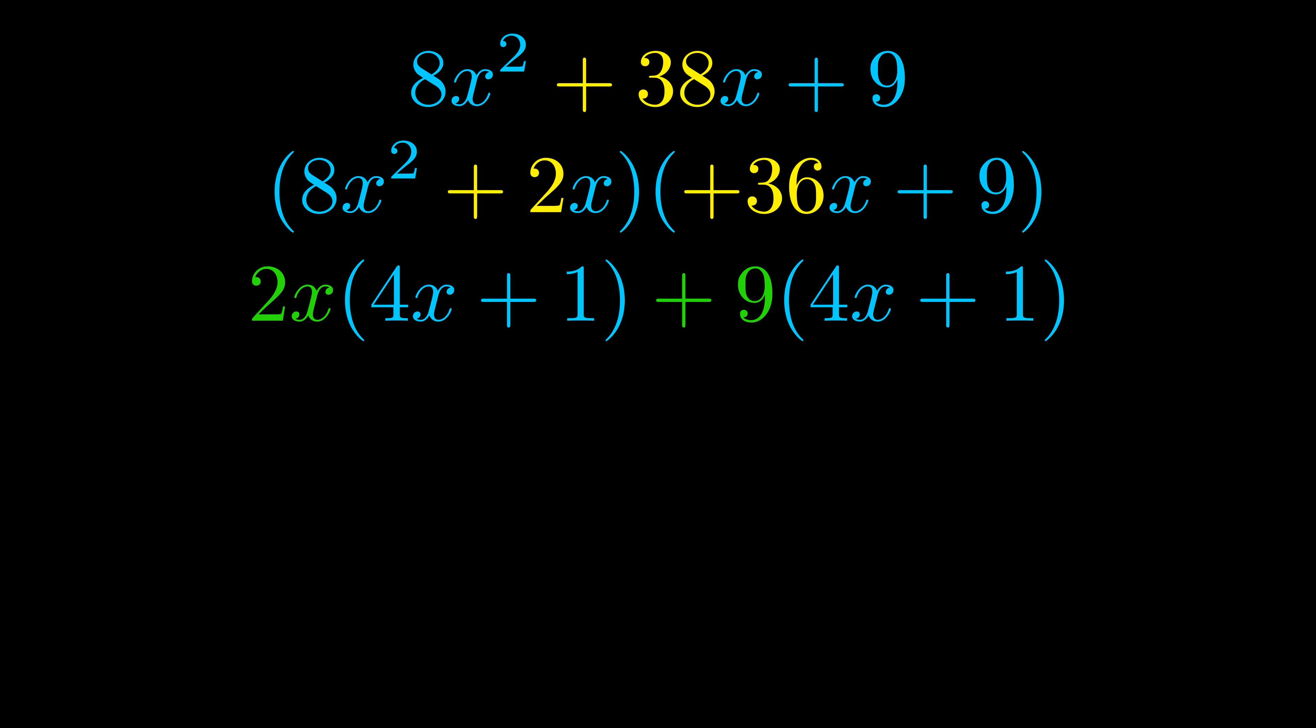Notice also how what remains inside of the parentheses is the same in both cases. The blue values are the same. Those blue values will become one of our factors and we will combine the two green values the GCFs that we pulled out to get the other one.